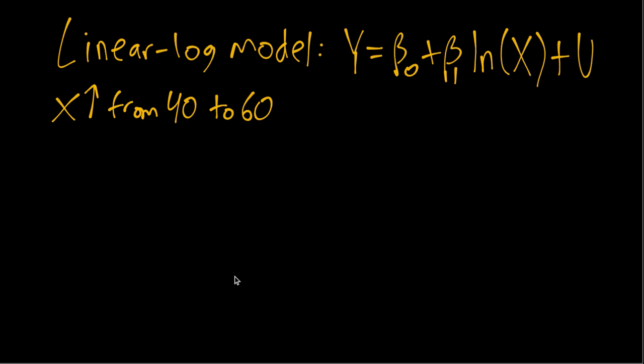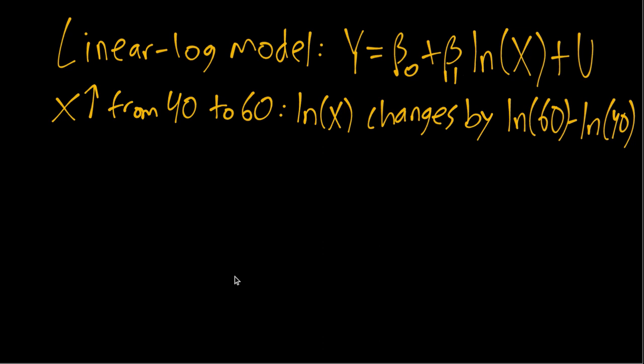So if X increases from 40 to 60, that means log X changes by log 60 minus log 40. Using these properties of the log function, we can rewrite that as the log of the ratio 60 divided by 40, which is the log of one and a half, which equals 0.41. So that's our change in log X.